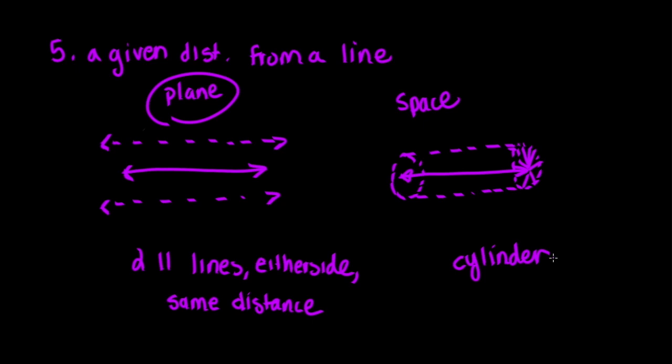Now that you've learned the famous five, you can use these when solving different types of locus problems. Some problems may say: sketch and describe the locus of points in a plane which are equidistant from the sides of a rectangle. Others might ask: given the point P, what is the locus of points two centimeters from P? It's very important to have a firm grasp on the locus of points and the famous five. Thanks so much for watching — I hope you found this video helpful. Please give it a thumbs up if you enjoyed it, and subscribe to my channel below if you haven't already.